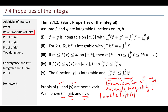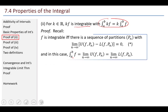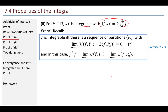For property two: kf is integrable and the integral from a to b of kf equals k times the integral from a to b of f. Recall: f is integrable if and only if there is a sequence of partitions pn where the limit as n goes to infinity of upper sum minus lower sum equals zero. In that case, the integral can be computed as the limit of the upper sums or lower sums. This was established in an earlier exercise.